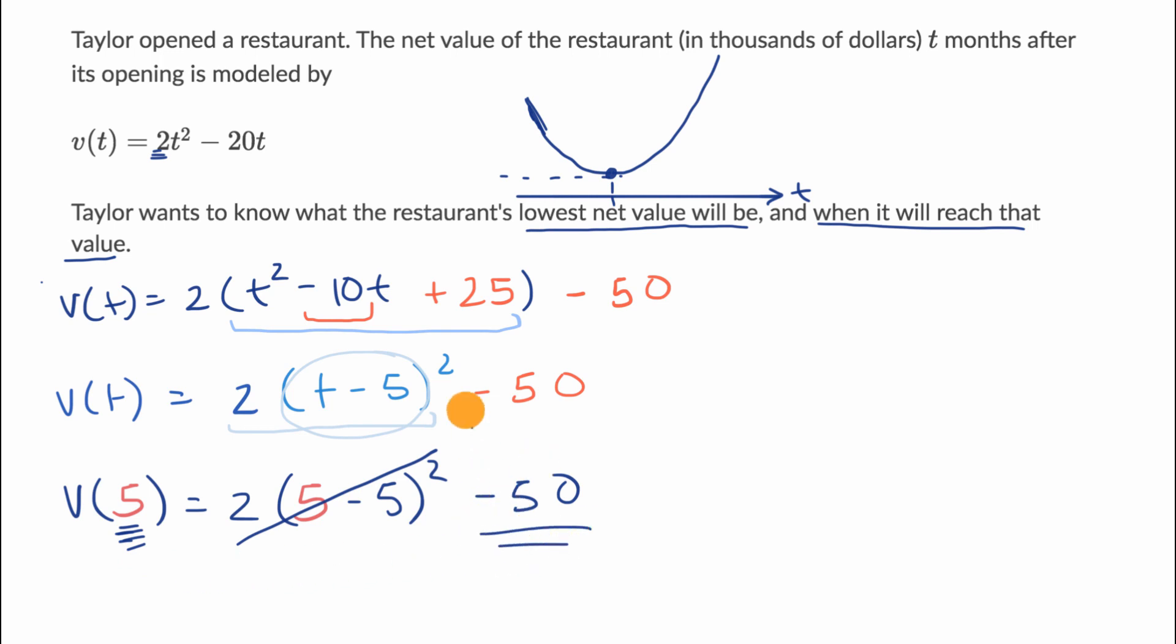So it's negative $50,000 as the lowest net value of the restaurant. You might say, how do you have a negative value of something? Well, imagine if the building is worth $50,000 but the restaurant owes $100,000, then it would have a negative $50,000 net value.